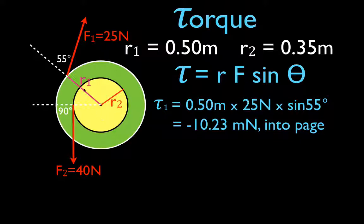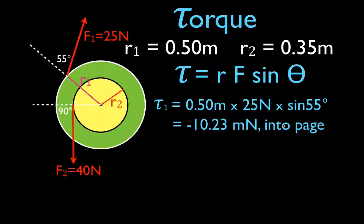The torque vector is always perpendicular to the plane created by the radial vector and the force vector — essentially the plane of your screen or paper. Using the right-hand rule: point your fingers along the radial vector, bend them toward the force vector, and your thumb points into the page. So the torque vector for force one is directed into the page.